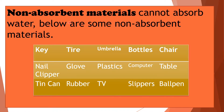Non-absorbent materials cannot absorb water. Below are some non-absorbent materials, such as key, tire, umbrella, bottles, chair, nail clipper, glove, plastics, computer, table, tin can, wrapper, TV, slippers, ball pen.